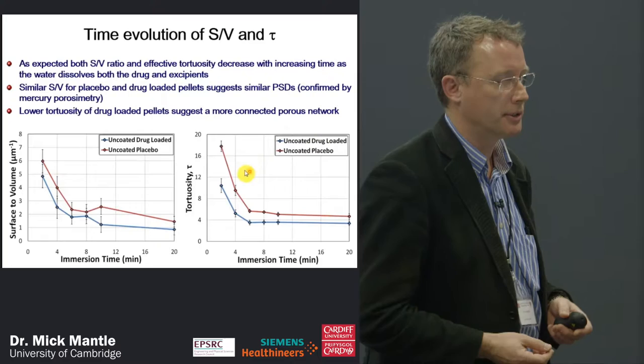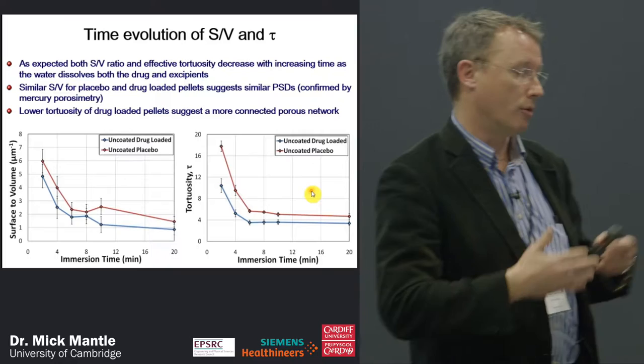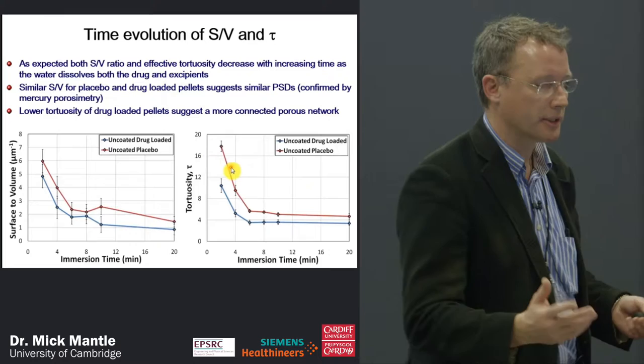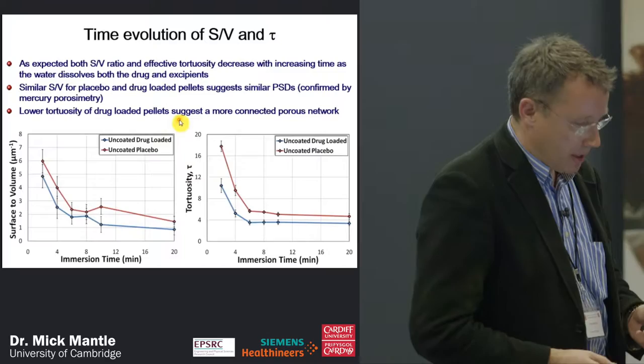In terms of tortuosity, we see a consistently higher tortuosity from the uncoated placebo, indicating a more tortuous network. Conversely, lower tortuosity for the drug-loaded pellets suggests a more connected porous network when the drug is present.